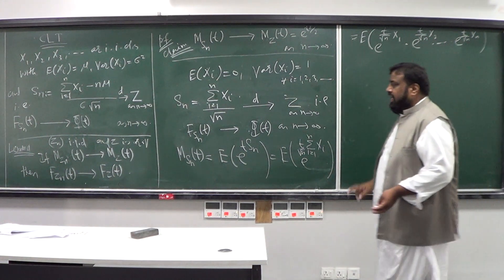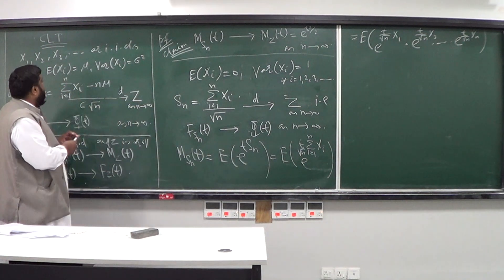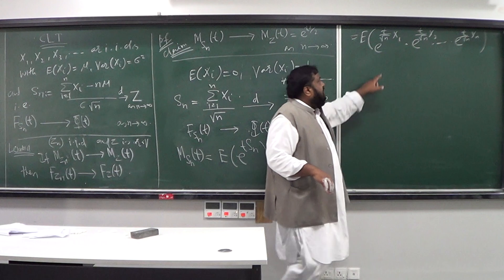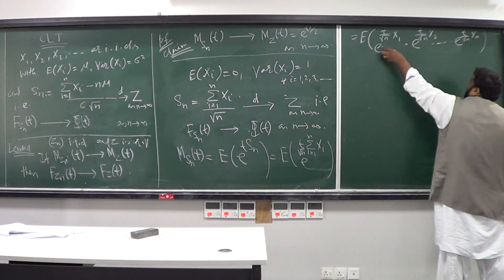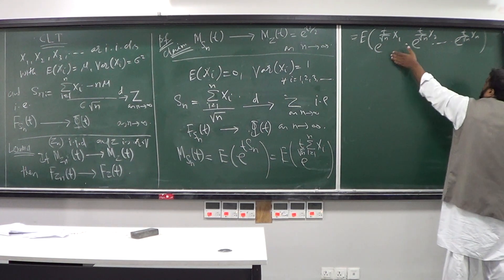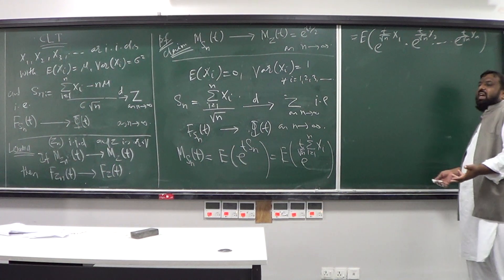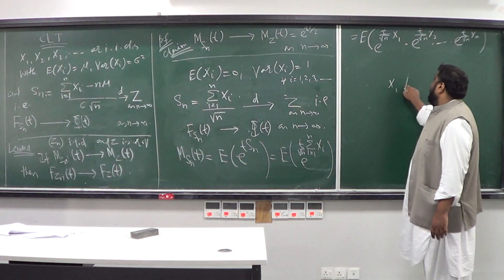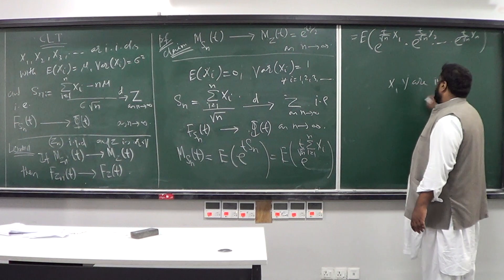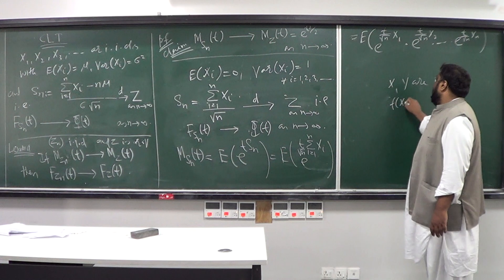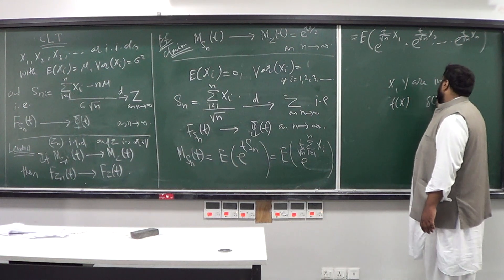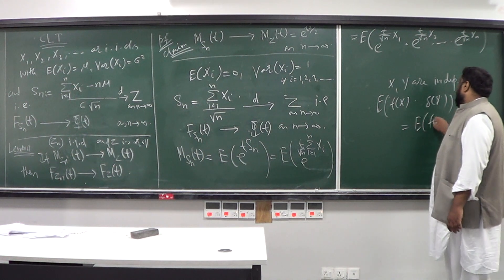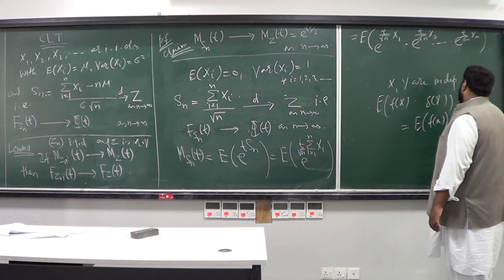Now, what do I know about these random variables X_i? They are independent. These exponential terms are continuous functions of X₁, X₂, ..., X_n respectively. We proved previously that if X and Y are independent, then any continuous function of X and any function of Y are also independent. Therefore, the expectation of their product equals the product of their expectations.